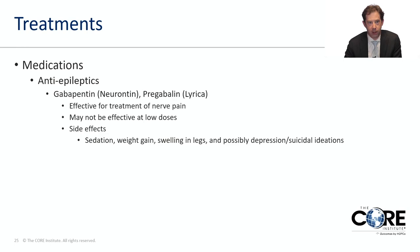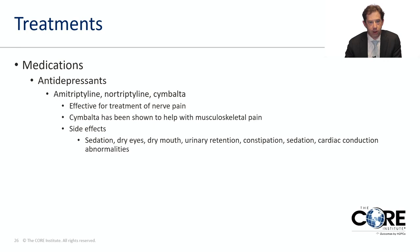Common medications we use for nerve-related pain are anti-epileptic medications — in this case, not used for seizures but because they work fairly well for nerve-related pain. Common ones are Gabapentin and Lyrica, also known as Neurontin and Pregabalin. These are fairly safe but sometimes not effective at low doses, requiring titration to see an effect. Side effects include sedation, weight gain, leg swelling, and sometimes depressive symptoms at higher doses — important to monitor in patients with a baseline history of depression.